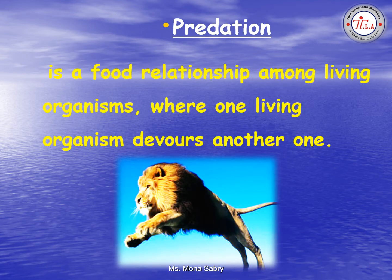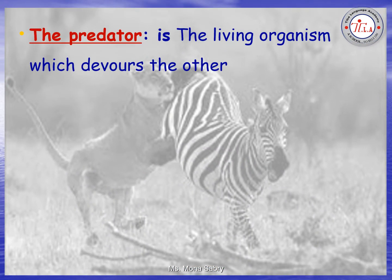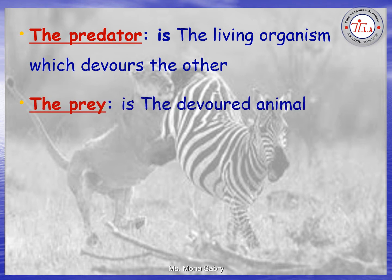Predation is a food relationship among living organisms where one living organism devours another. The predation relationship consists of the predator and the prey. The predator is the living organism which devours the other, and the prey is the devoured animal.